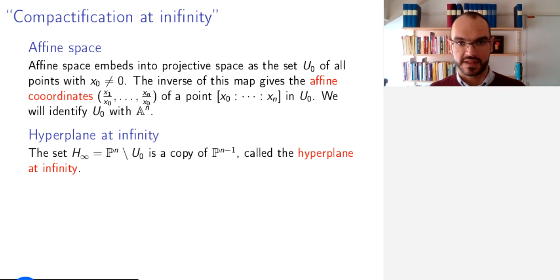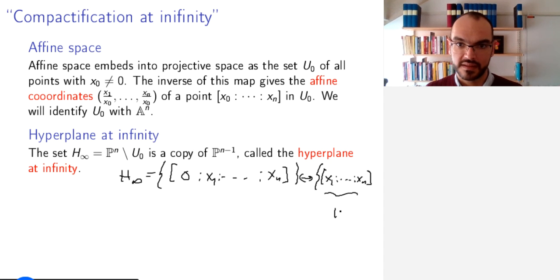What about the rest? The complement of this U_0 is the set of all these guys with the first one equals 0. So we have [0 : x_1 : ... : x_n]. Now we can forget about the first coordinate, so this is in one-to-one correspondence with the set of simply [x_1 : ... : x_n], and this is P^{n-1}.